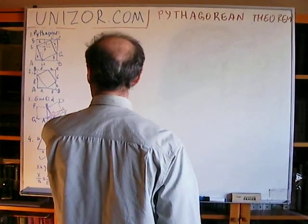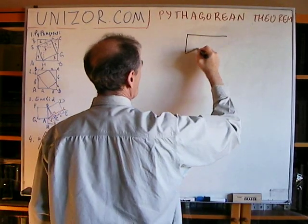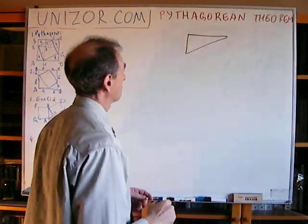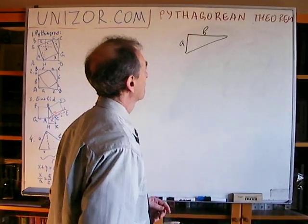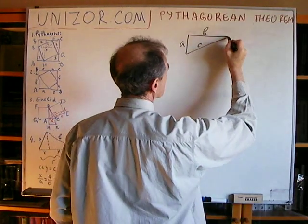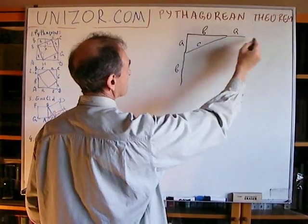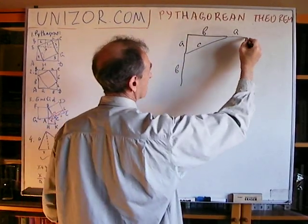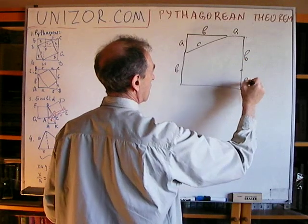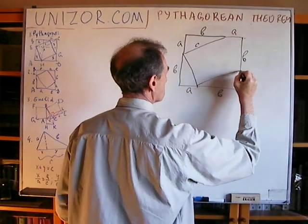Number one proof: here is what I am suggesting, following the original proof which belongs to Pythagoras. This is our original right triangle. What Pythagoras suggested is the following: let's extend this side by length A and this by length B. So this total side is A plus B, and this is A plus B, and this is the right angle. Then we complete a square, putting B, A, B, A at the corners.